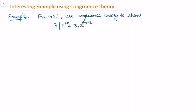In this video I am going to solve an interesting example using congruence theory. In my earlier videos I have taken some very interesting examples involving large exponents using congruence theory. Now let's consider a similar type of problem — we used to solve these using mathematical induction, but now I want to use congruence theory. We want to prove that 7 divides 5 to the power 2n plus 3 times 2 to the power 5n minus 2, where n is greater than or equal to 1.